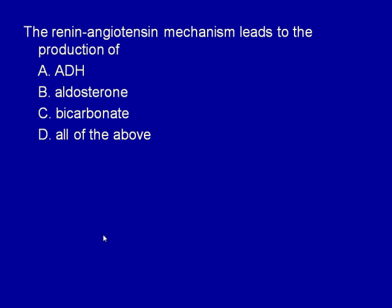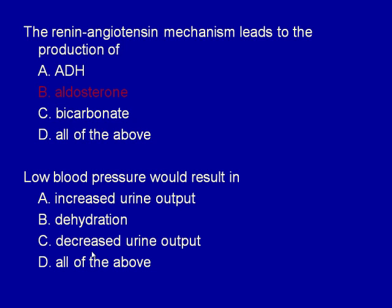The renin-angiotensin mechanism leads to the production of aldosterone — this mechanism is the most powerful way to get aldosterone, and it is stimulated by low blood pressure. Aldosterone helps increase blood volume by retaining sodium from the urinary filtrate. Low blood pressure would result in a decreased urine output — low blood pressure drives the hydrostatic filtration mechanism, and if it is too low, you will have decreased urinary output.